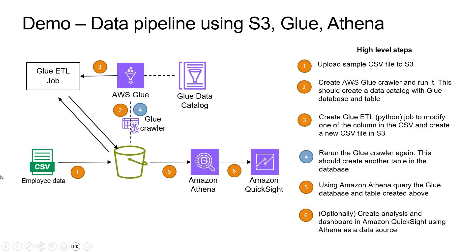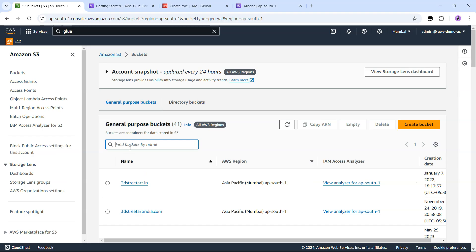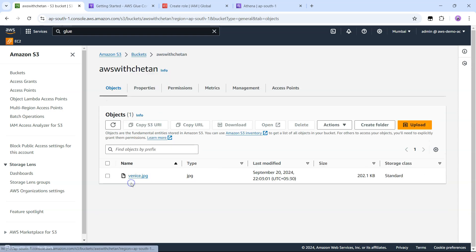To begin with, I need this CSV file — I created it using ChatGPT. You can also create one or use the file I have provided with this lecture. Now let's go to Amazon S3, create some folders so our data is organized, and then upload this CSV file into the S3 bucket. For storing the data, I'll use the same bucket I had created earlier, that is AWS with Chetan.